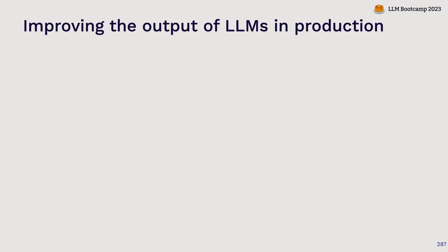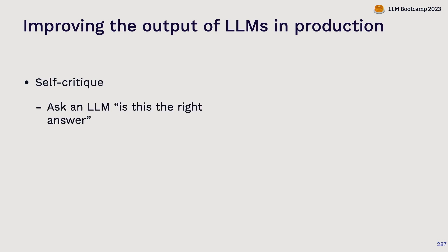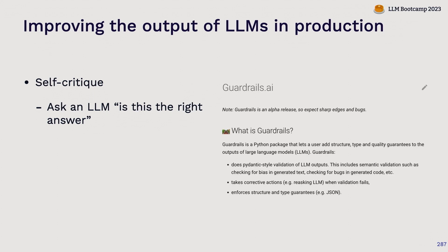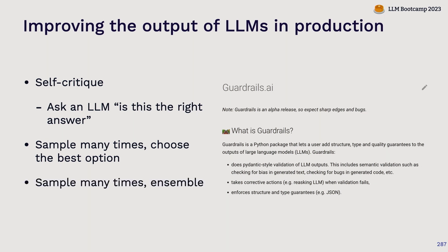Next topic: now you've gotten this thing into production — how do you improve? One way is through some of the techniques we talked about in prompting and chaining: self-critique, asking the LLM to assess its own answer. If you have a high budget for cost and latency, you can do that before you return the answer to the user. There are libraries like Guardrails AI that help you do this in a more systematic way.